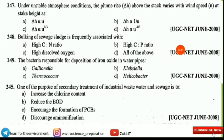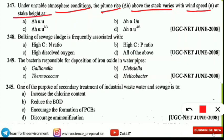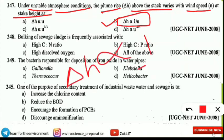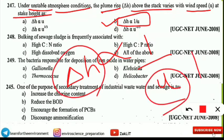The next question is: under unstable atmospheric conditions, the plume rise (delta h) above the stack varies with the wind speed (small u) at the stack height as what? It is asking about the relationship between plume rise delta h and wind speed u under unstable conditions. The correct option is option B — it is inversely proportional. When wind speed is more, delta h (plume rise) is less; when wind speed is less, the plume rise above the stack height is more.